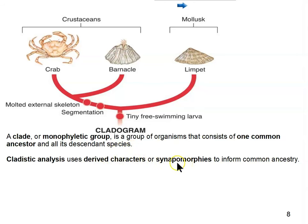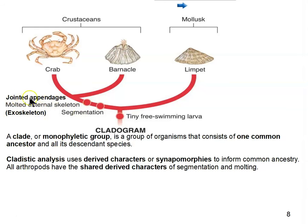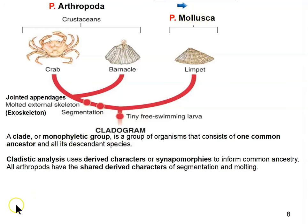They use those characteristics to inform common ancestry — in other words, to figure out who's related to whom. All arthropods have the shared derived characters of segmentation, molting, an exoskeleton, and jointed appendages. The jointed appendages are why we call arthropods arthropods. The limpet is a mollusk — phylum Mollusca — and by the way, Mollusca means soft body. That's why most of them have a shell to protect their soft body.